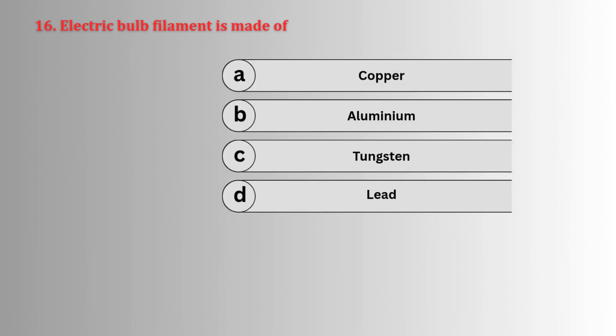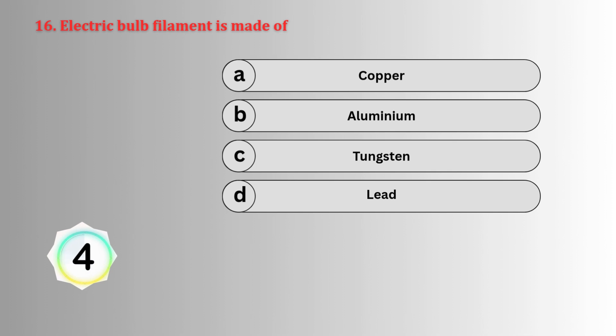Electric bulb filament is made of tungsten.